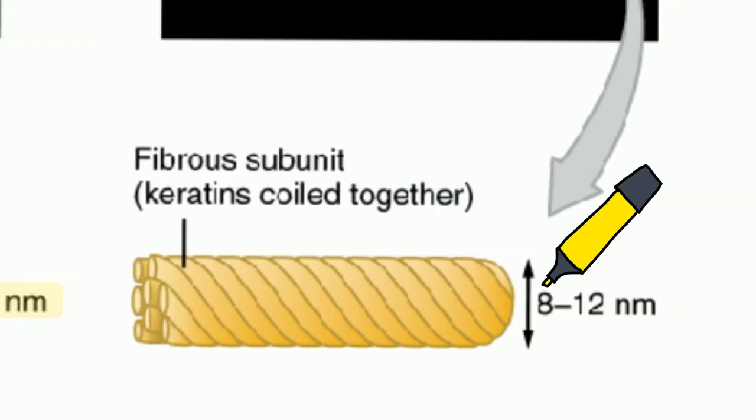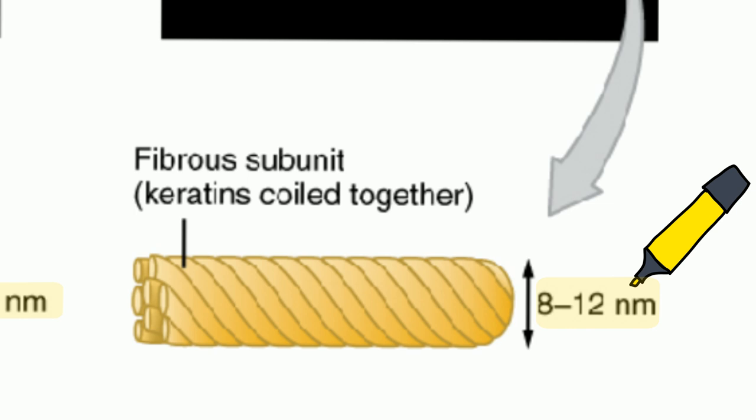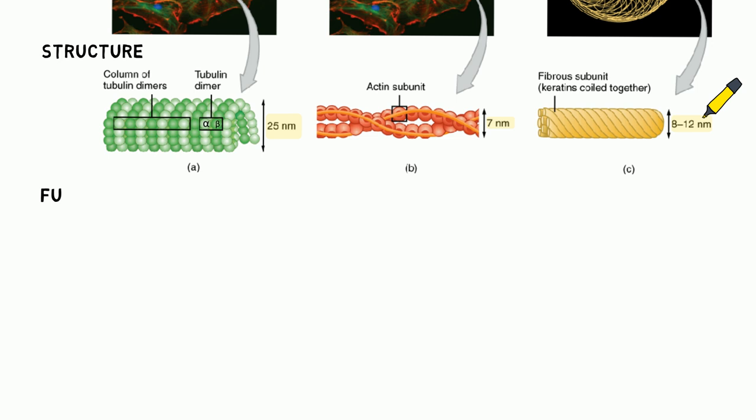As their name suggests, intermediate filaments are mid-sized, about 8 to 12 nm in diameter. They are composed of keratin and keratin-like protein arranged in a rope-like conformation.